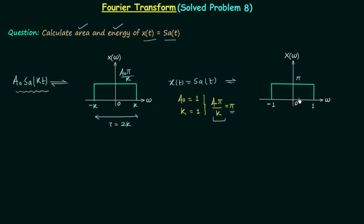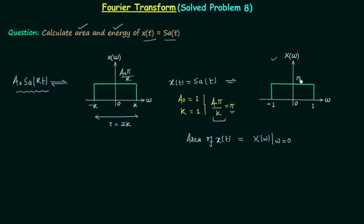Now that we have the Fourier transform of x(t), we will use a property of the Fourier transform to calculate the total area. The area of a time-domain signal x(t) equals its Fourier transform evaluated at ω = 0. From our rectangular X(ω), when ω = 0, X(ω) = π. Therefore, the total area is equal to π.